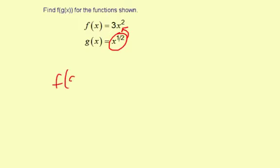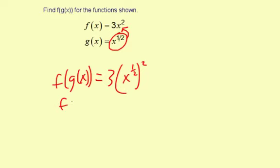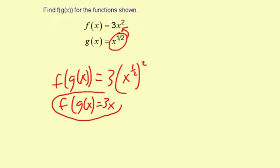So f of g of x equals 3, and then x to the 1 half, quantity squared. So f of g of x equals x to the 1 half squared is just x, so it's just equal to 3x. So there's your function — f of g of x is 3x.